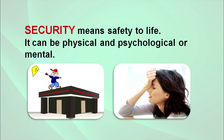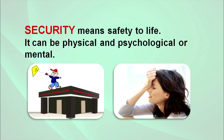Let us understand what security means — security means safety to life. There can be security at many places related to many things, but here we are focusing on physical and psychological or mental security at home. In these two pictures you can easily see a child flying a kite on a roof where there is no bar, so there is a very high risk that this child, while playing, can easily fall and get serious injuries. In another picture you are seeing an adolescent girl who is disturbed — her mental or psychological security is at risk.